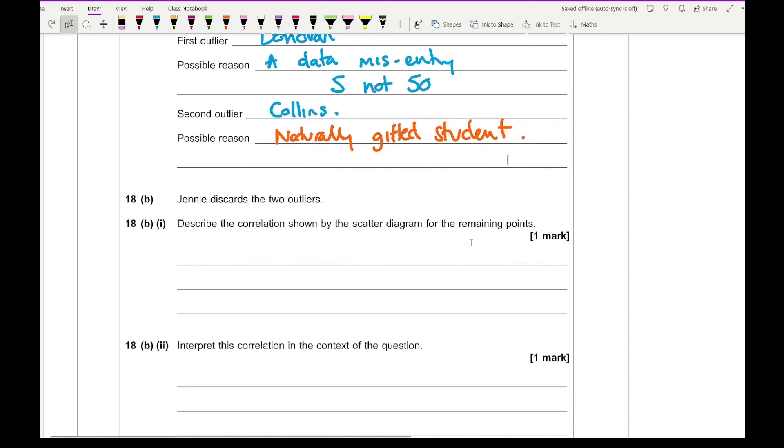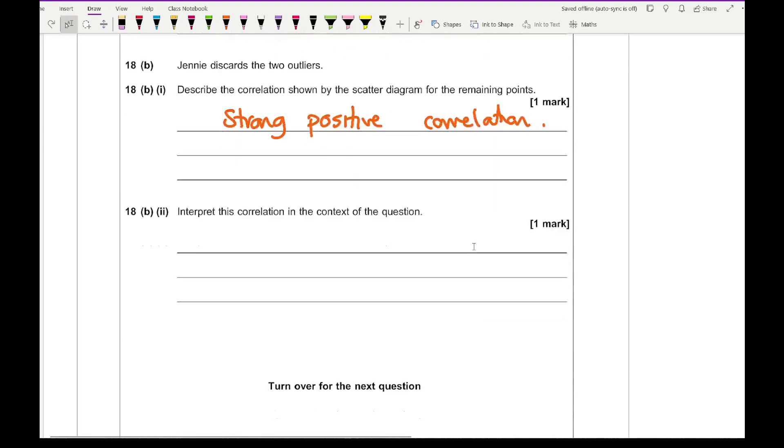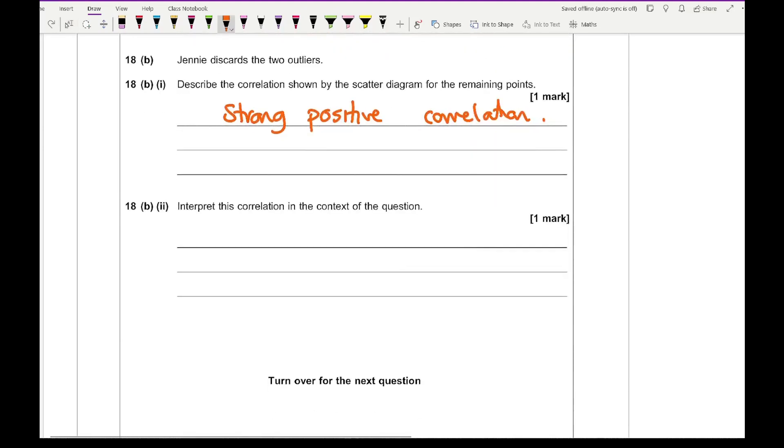For question 18b, Jenny discards the two outliers, describe the correlation shown by the scatter diagram for the remaining points. What we need to write here is that it's going to be strong, positive correlation. Then interpret this correlation. When we've got strong positive correlation, it basically means that the more hours completed, the better the practice exam score.